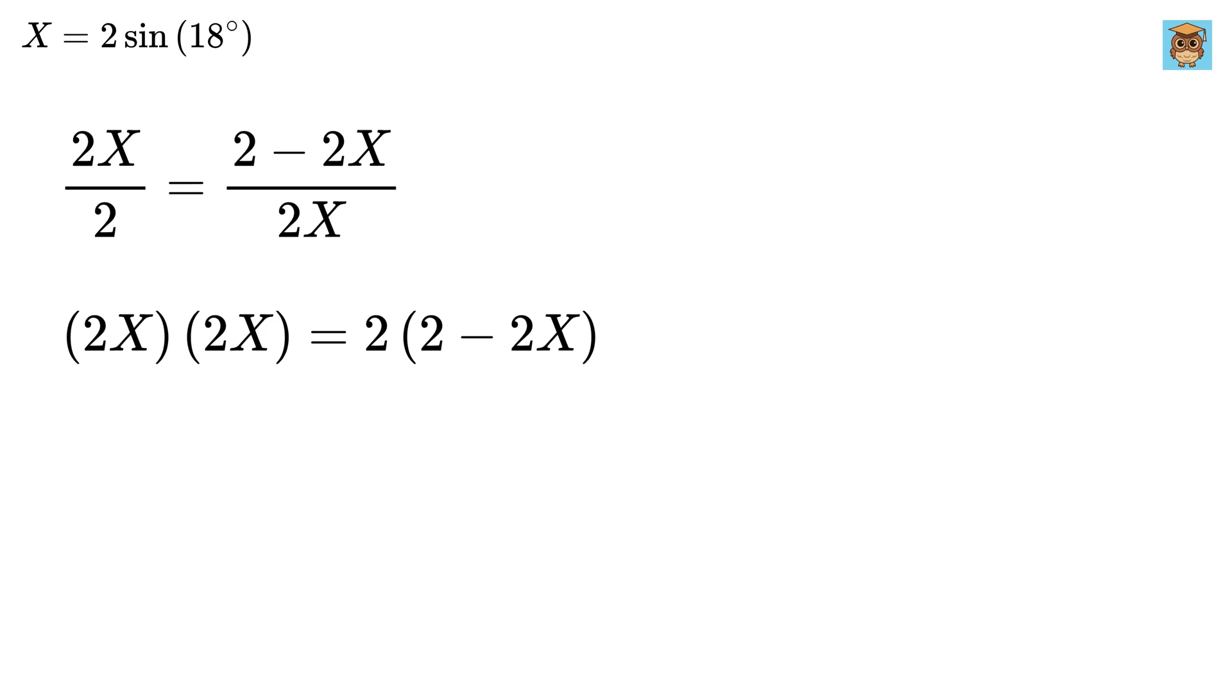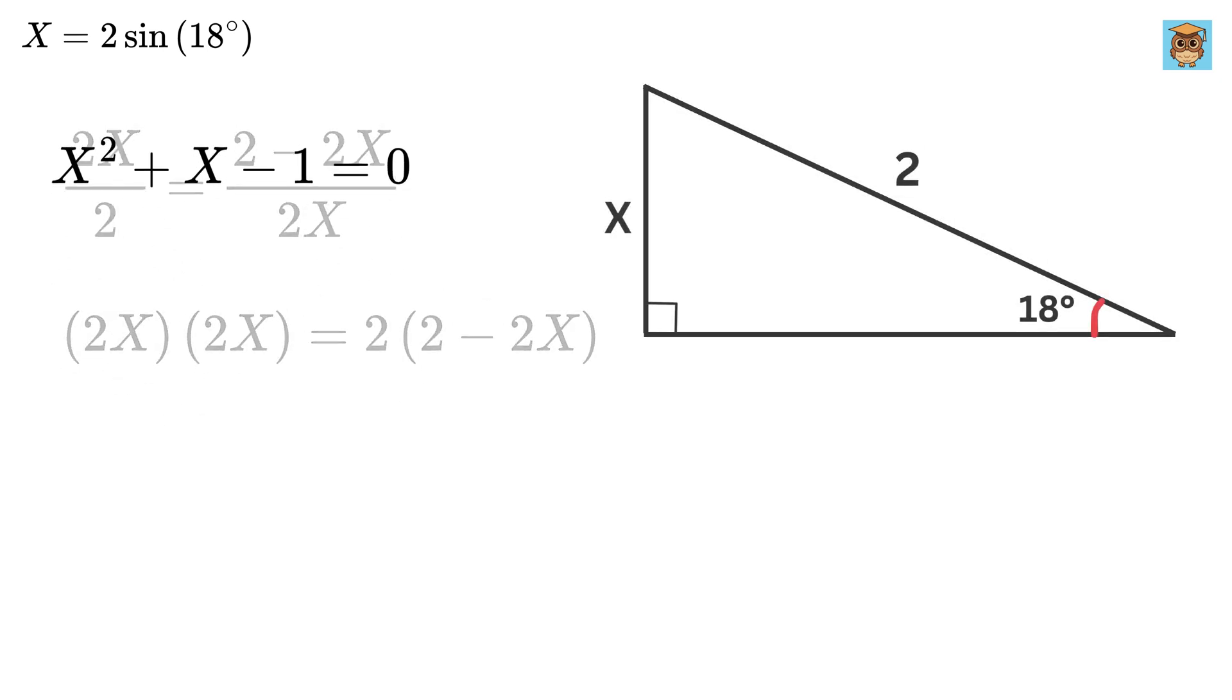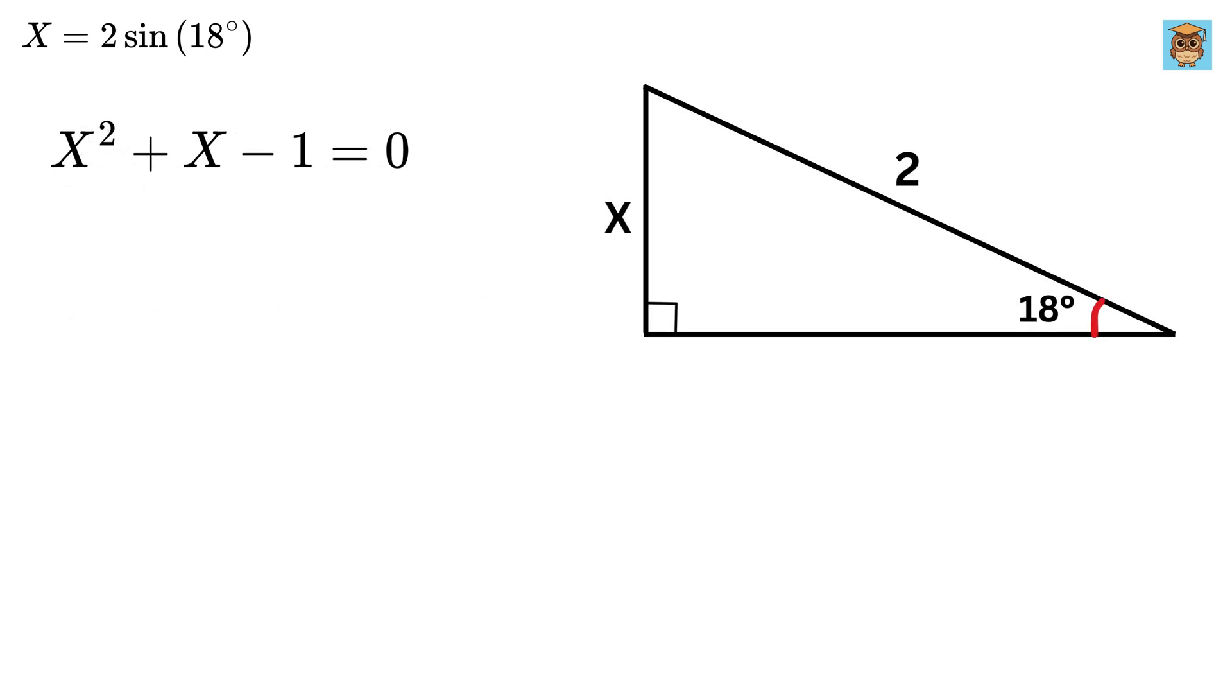Now let us cross multiply them like this to get this. Expand and rearrange it to get this. I will not bore you by solving quadratic equations—it's super easy. We finally get the roots of this equation as this and this. Now x cannot be negative because it is the side length of this triangle.